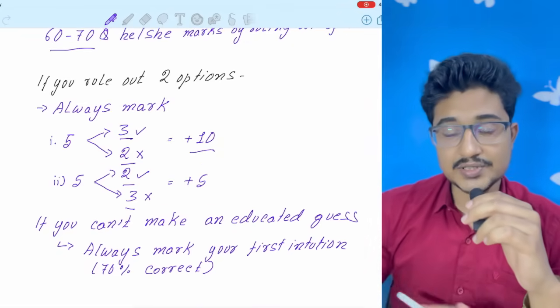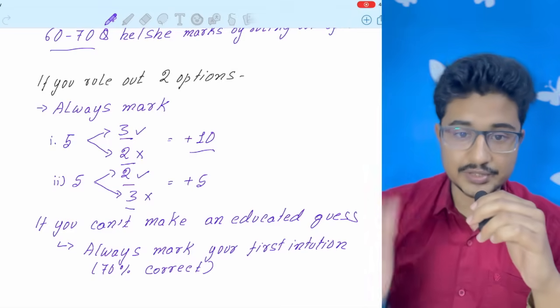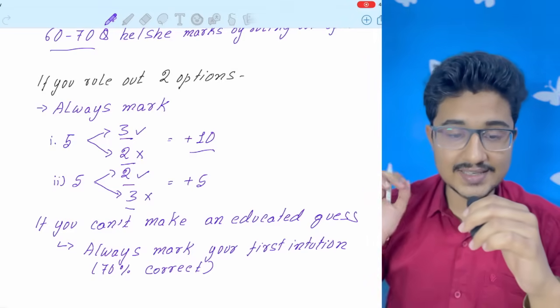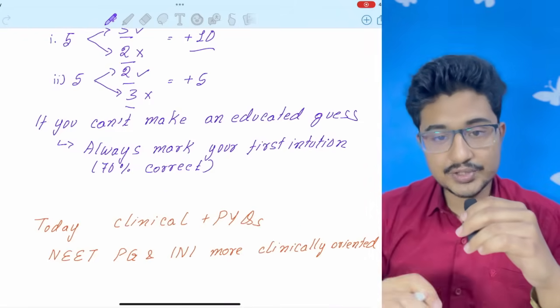And that is why you should never miss out a question where you have ruled out two options. In case of the two options, if you can't make an educated guess, then go with your first intuition. Because in studies, it has been shown that our first intuition is 70% correct.